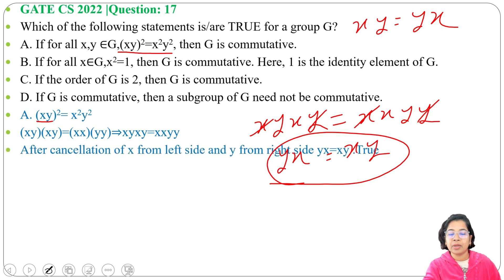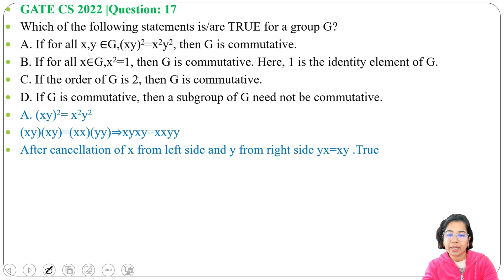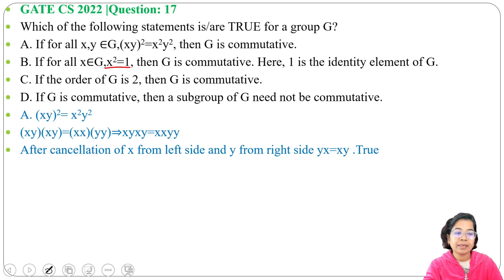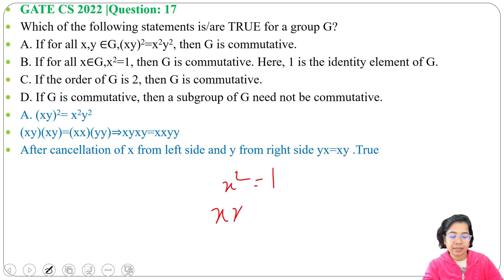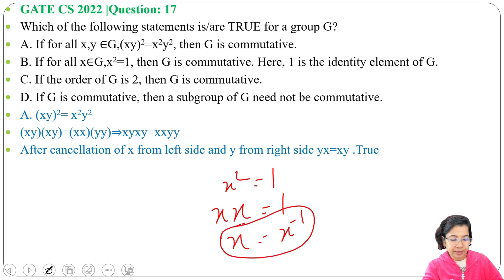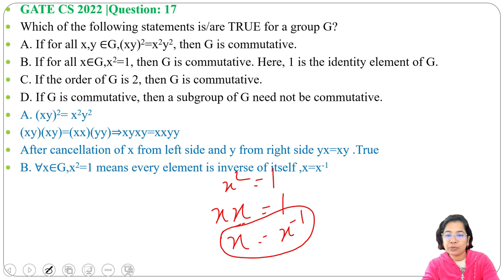Next, Option B: if for all x belonging to G, x² equals 1 (where 1 is the identity element), then G is commutative. Since x² equals 1, we can write x·x equals 1, which means x equals x inverse. This is true for all x, meaning every element is its own inverse.